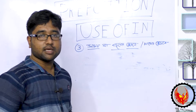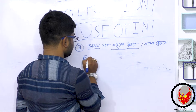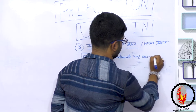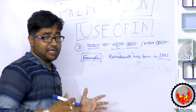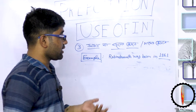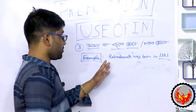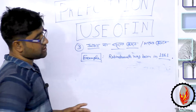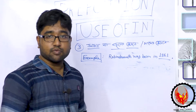Let's see another example. Rabindranath was born in 1861. Here 'in' is used before the year. So when referring to a year or month, we use the preposition 'in.' From this example we learned the rule that 'in' is used for years and months.